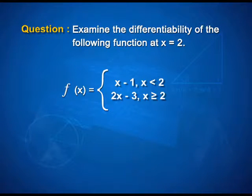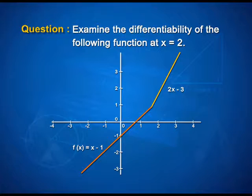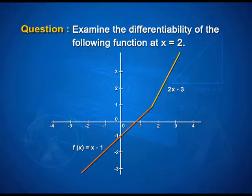Let us take a problem to discuss the differentiability of a function at a particular point. Examine the differentiability of f(x) at x = 2, where the function is defined as: f(x) = x minus 1 for x less than 2, and f(x) = 2x minus 3 for x greater than or equal to 2. Looking at the graph, it has two parts with no gap, so it is a continuous function. But notice that at x = 2, there is a sharp corner being formed. Any function which has a sharp corner in its curve is not differentiable at that point.